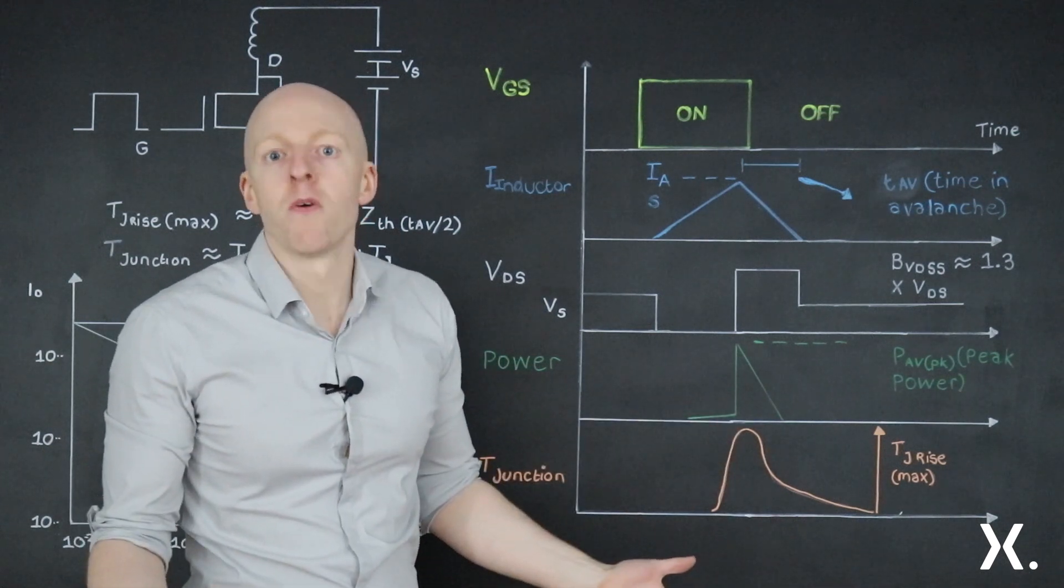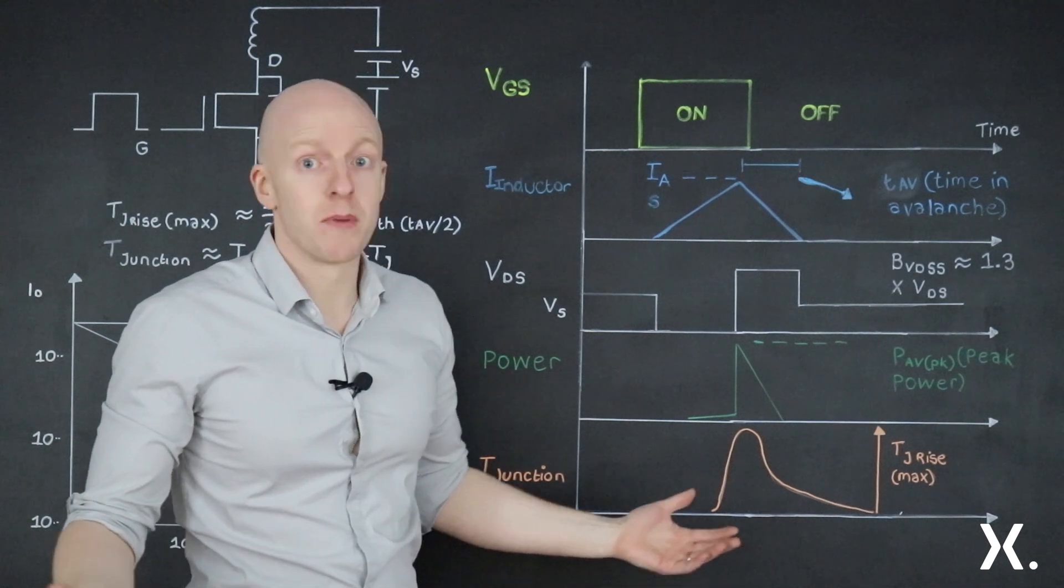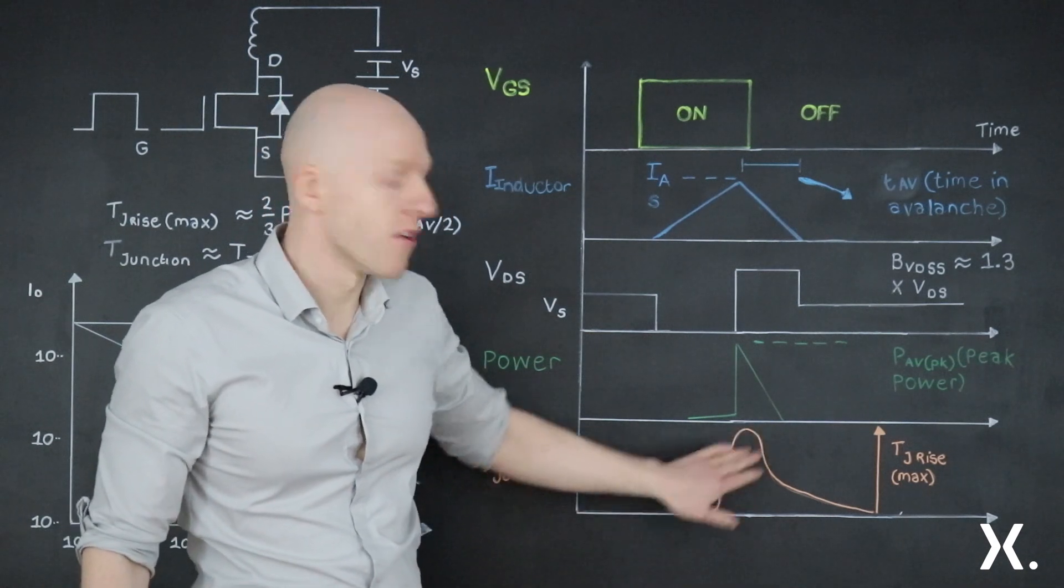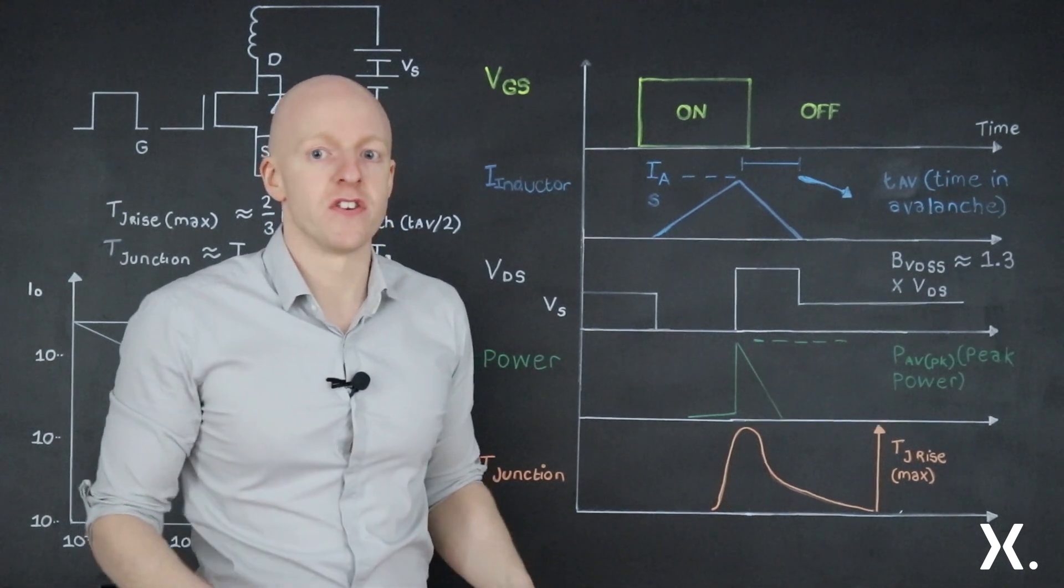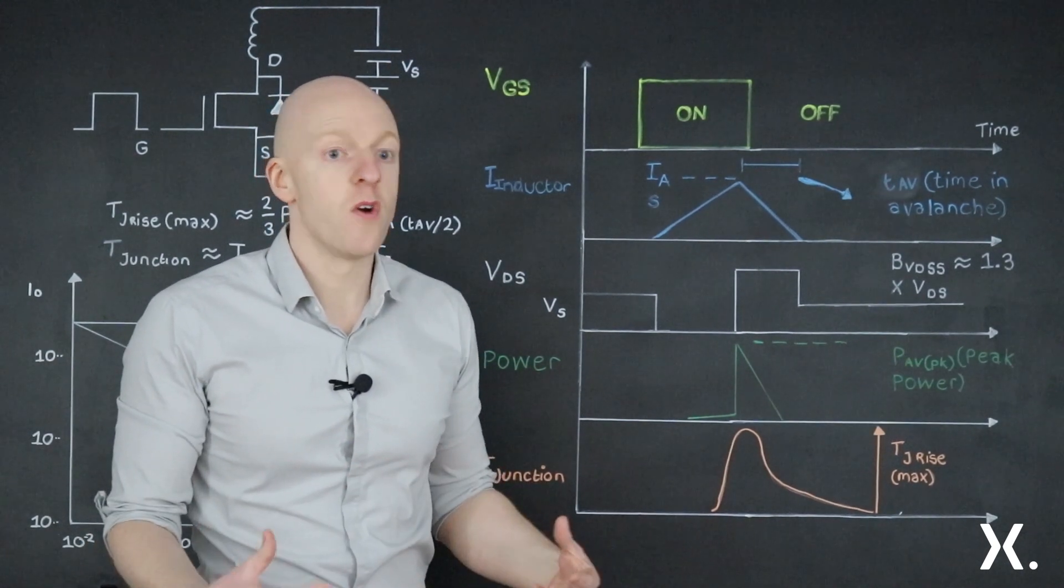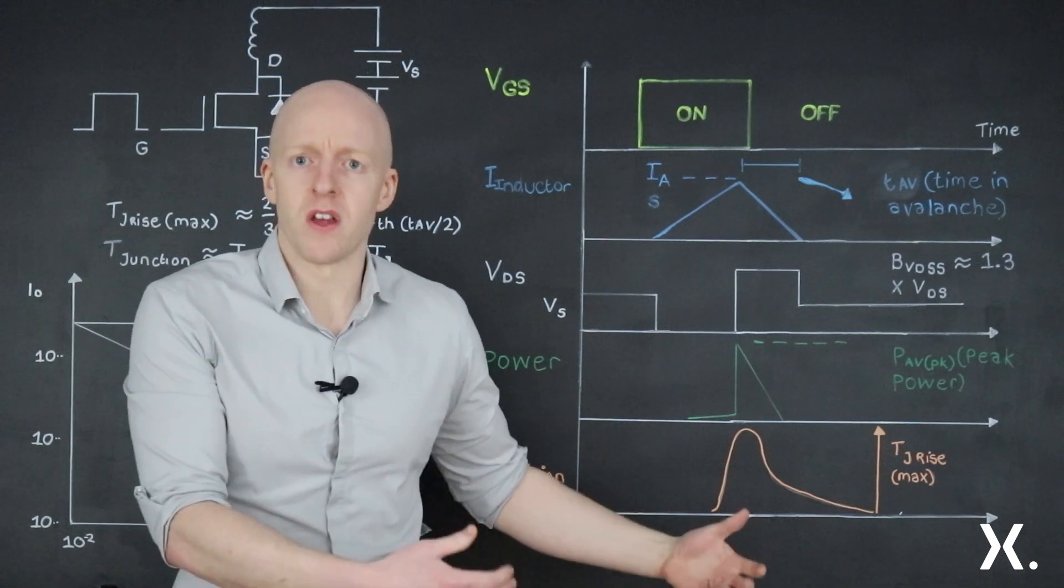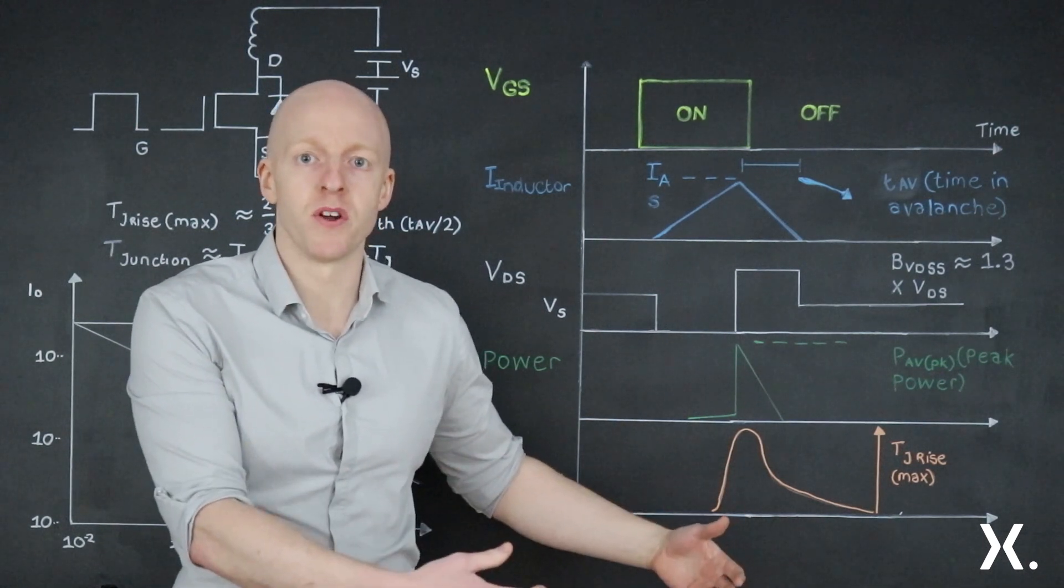When you put power into a MOSFET, you will inevitably get a temperature rise or heat. And that's ultimately what gives your limit in avalanche operation. You want to make sure that you don't overheat the MOSFET and reach its failure or critical temperature point.